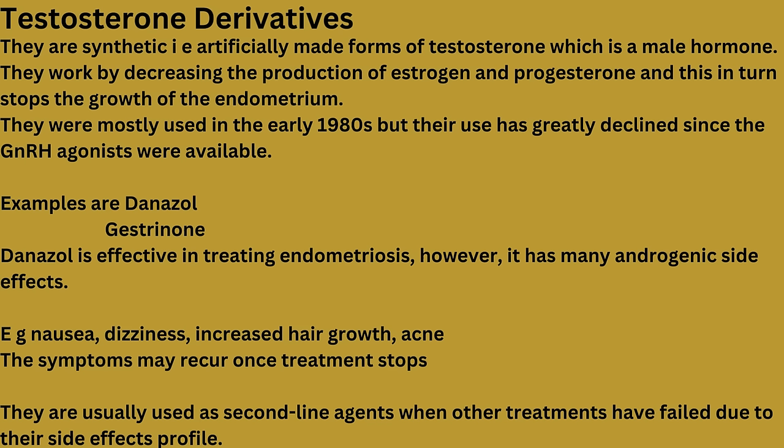Another set of hormonal treatments are called testosterone derivatives. These are synthetic — that is, artificially made — forms of testosterone, which is a male hormone. They work by decreasing the production of estrogen and progesterone, which in turn stops the growth of the endometrium. They were mostly used in the early 1980s but their use has greatly declined since GnRH agonists became available. Examples are danazol and gestrinone. Danazol is effective in treating endometriosis; however, it has many androgenic side effects such as increased hair growth and acne, as well as nausea and dizziness. Symptoms may recur once treatment stops. They are usually used as second-line agents when other treatments have failed, due to their side-effect profile.